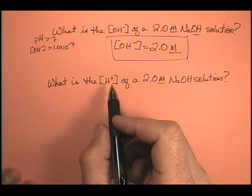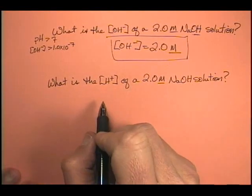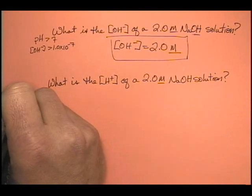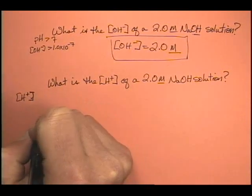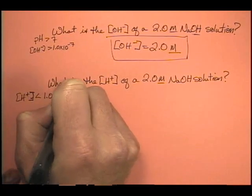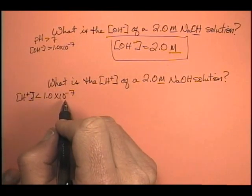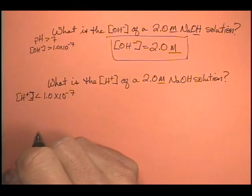How about the second part? Well, now we want to find out the hydrogen ion concentration of this solution. Well, keep in mind, if this is a base, then I know that my hydrogen ion concentration for basic solutions is less than 1.0 times 10 to the minus 7. So, since it's less than, that's kind of our target region.